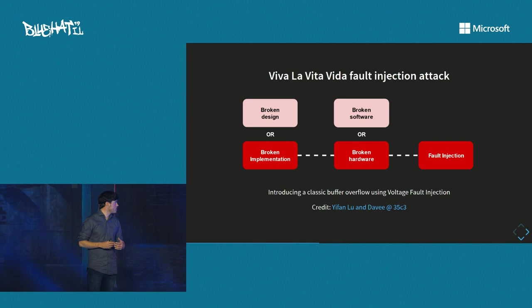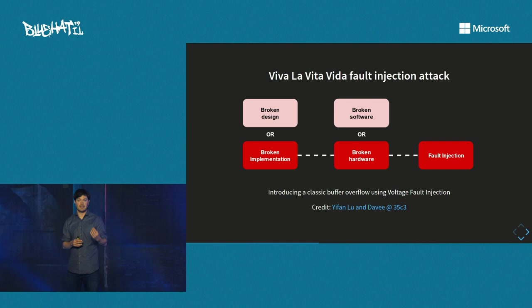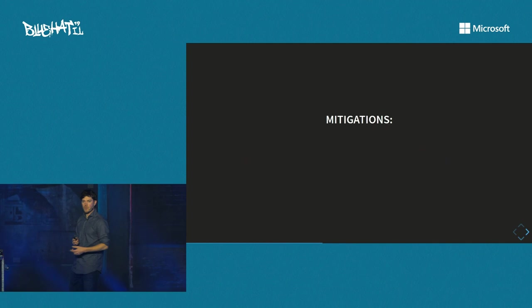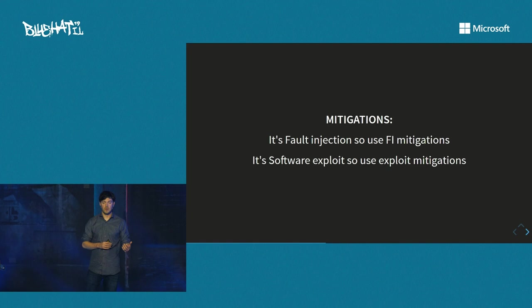The final public example is a fault injection attack on the PS Vita — a broken implementation on broken hardware. In this case, they used fault injection to bypass a length check, meaning more data is copied in, which gives you a classic buffer overflow attack. The mitigation requires both fault injection countermeasures and software exploit mitigations, since this attack is a combination of both.